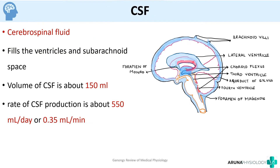CSF or cerebrospinal fluid is basically a fluid that fills up the ventricles and the subarachnoid space of the brain. The volume of CSF is around 150 ml and the rate of production is around 550 ml per day or 0.35 ml per minute.